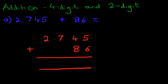2,745 plus 86. Let's label the columns as well. The first column on the right-hand side is the units. The next one is the tens, then the hundreds, and lastly we have the thousands. We have now rewritten the question from the horizontal format into the vertical format. We are now ready to do the addition.